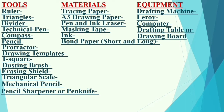So this is the set of tools, materials and equipment. For tools: ruler, triangle, divider, etc. For materials: tracing paper, drawing paper, masking tape, ink. Then for equipment: drafting machine, computer, drawing table. And that's it.